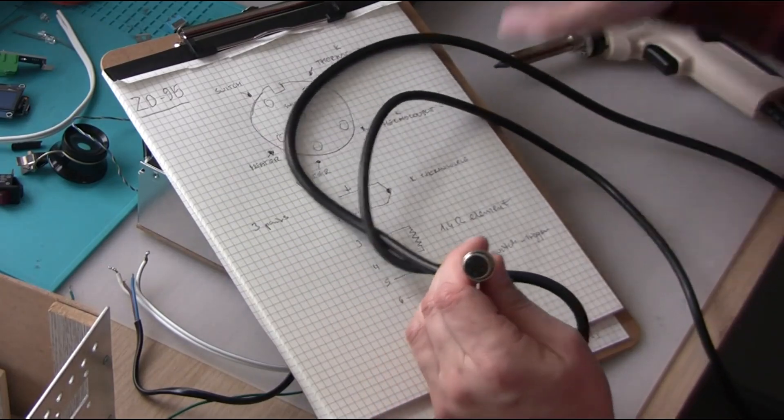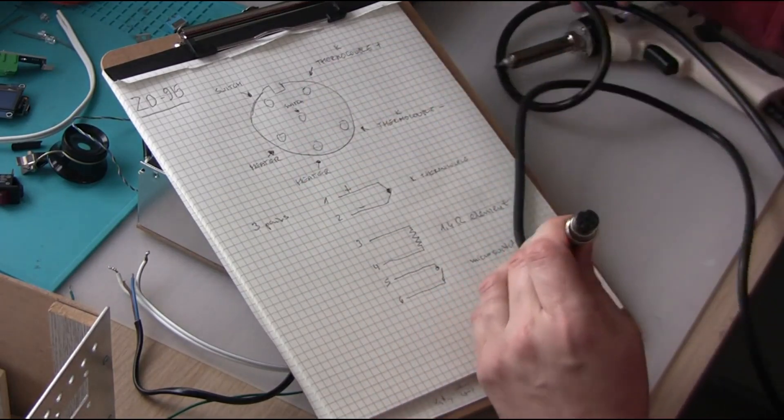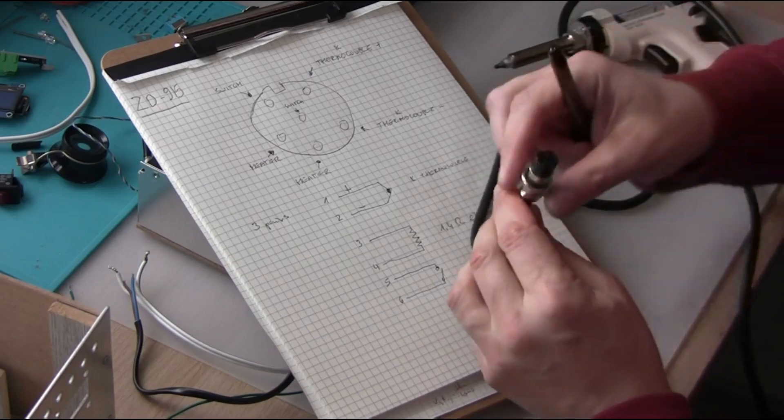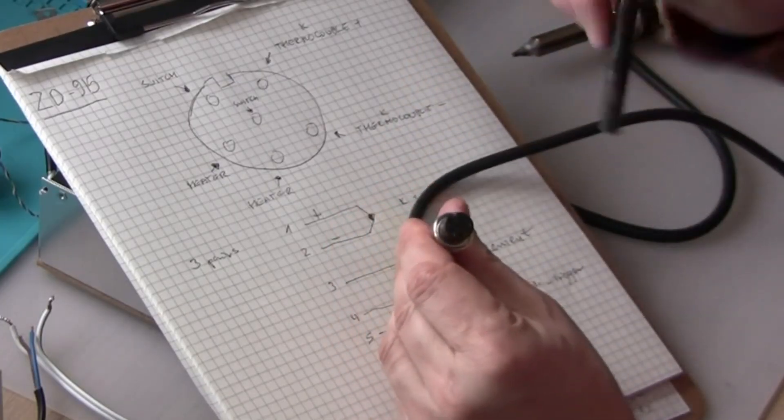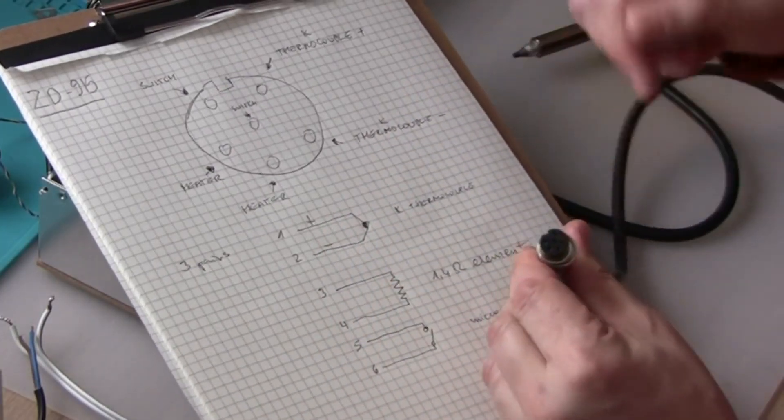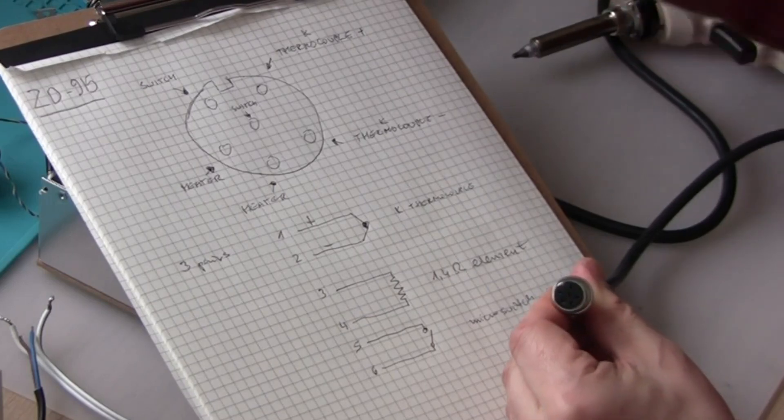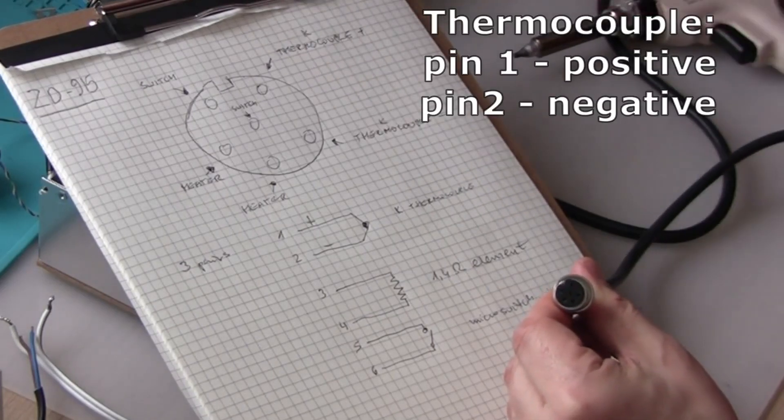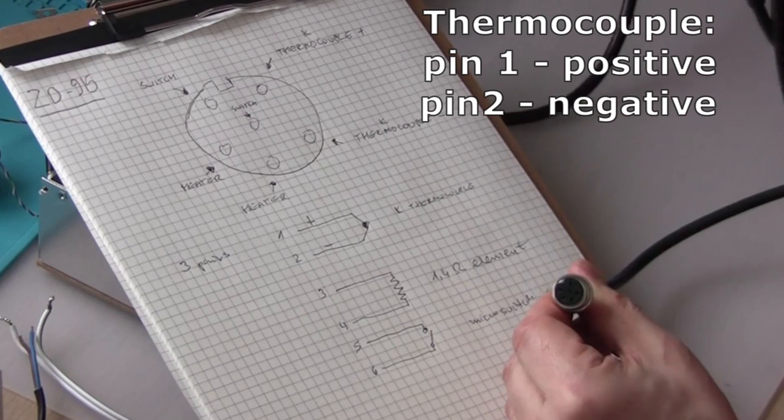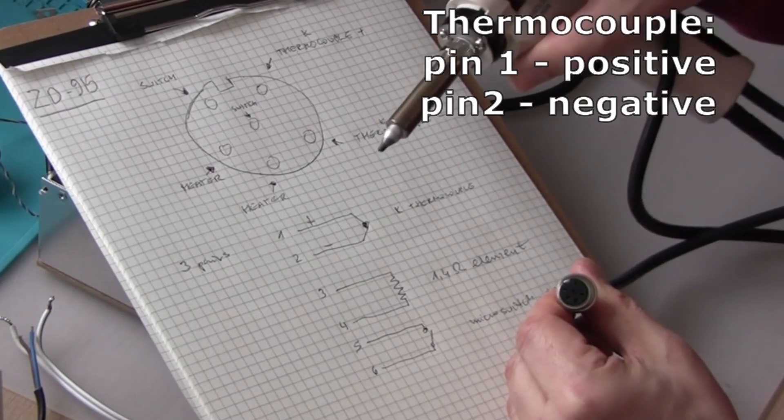And what's in the socket? What pins do we have? In the socket we have a thermocouple, so there is a temperature sensor in the gun.